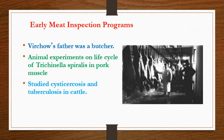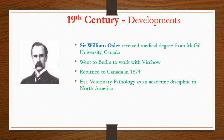Modern meat inspection started as early as the 19th century. Virchow's father was a butcher. Animal experiments on the life cycle of Trichinella spiralis in pork muscle were done in those days, along with studies of cysticercosis and tuberculosis in cattle. In the 19th century, Sir William Osler, a human medicine doctor, later went to Germany and studied with Virchow, and he developed veterinary pathology for studying animal diseases.